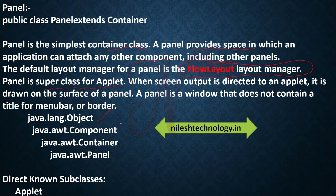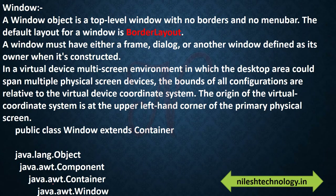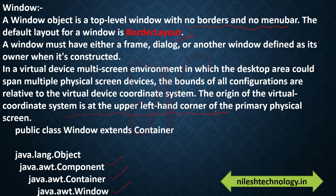So in the hierarchy: Object is the parent, its subclass is Component, subclass of Component is Container, subclass of Container is Panel, and the subclass of Panel is Applet. Next is Window — Window is a top-level window with no border and no menu bar. By default, the layout of Window is BorderLayout. The origin of the virtual coordinate system is at the upper-left-hand corner of the primary physical screen.